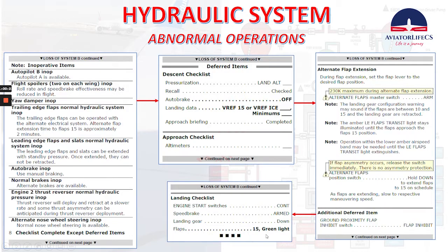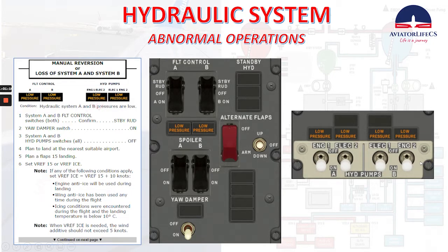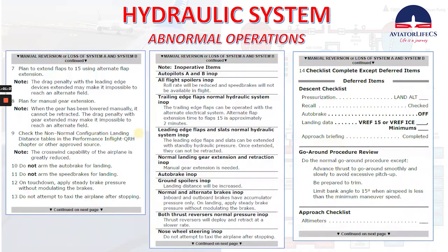Now let's talk about manual reversion — loss of both system A and B. We will see low pressure for system A and B in all the hydraulic pumps. System A and B flight control switches — both confirm standby rudder, then select standby rudder on both. Yaw damper switch on. System A and B hydraulic pump switches — all off. Plan to land at the nearest suitable airport — this is a MAYDAY call. Plan a flap 15 landing, set Vref 15 or Vref ice. Plan to extend flap 15 using alternate flap extension.